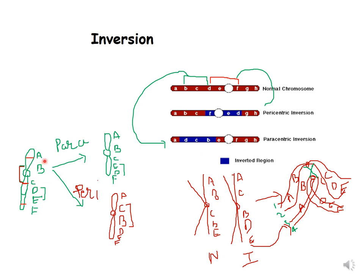In this diagram the genes are A, B, C, D, E, F. In paracentric inversion the inverted region is E, D — since it is not including the centromere we call it paracentric. In pericentric inversion the inverted region compared to the normal chromosome is C, B — since it includes the centromere we call it pericentric inversion.